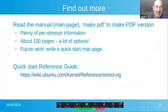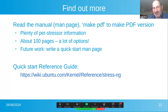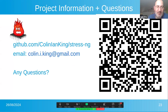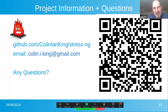If you want to find out more, there's a manual — get the software, clone it, type make PDF, and produce a PDF of the manual. It's over 100 pages now with nearly 1,000 options altogether. My aim in the future is to write a quick start manual page. There's a quick reference guide on wiki.ubuntu.com if you want to get started quickly. I'm aiming to write more documentation to help people who are new to StressNG, because with all these stress cases it can be very overwhelming. You can send email to my Gmail account — I try to reply within 24 hours, and I try to get around to bug fixes and requests within 48 hours.